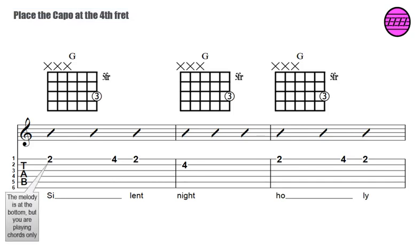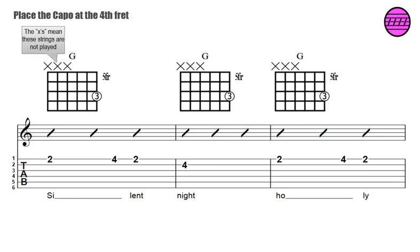The melody is at the bottom, but you are playing chords only. The X's mean these strings are not played. You will be strumming the first three strings.